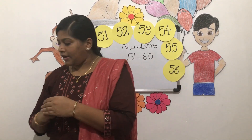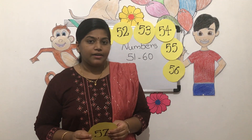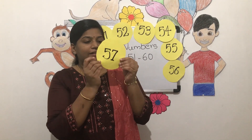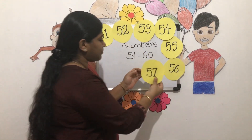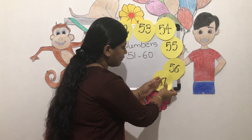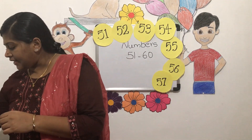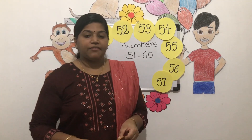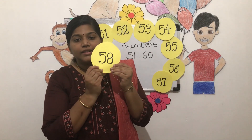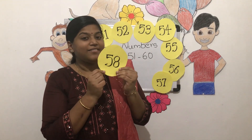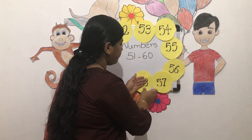Now after 56, tell me the number. 5 7 — 57. After 57, what comes? It is 5 8 — 58.